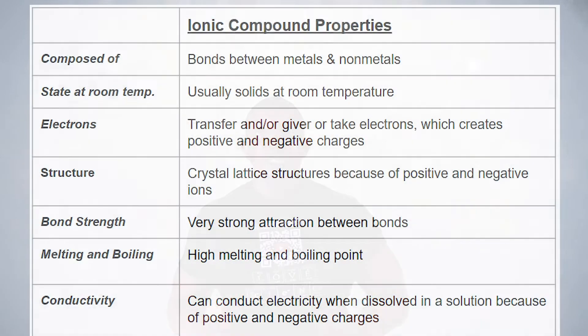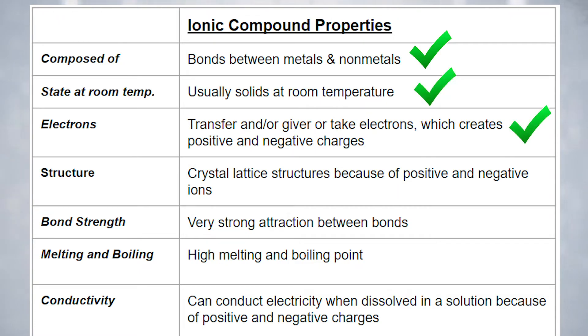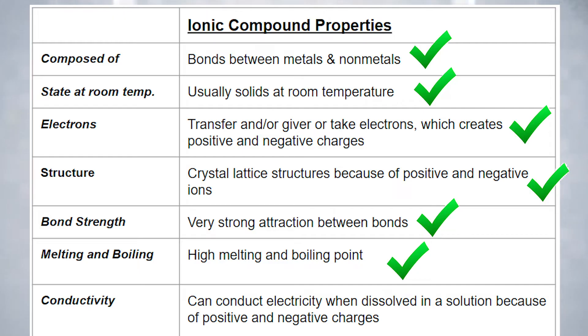Let's do a quick recap of ionic and covalent compounds. Ionic compounds are bonds between metals and non-metals and are usually solid at room temperature. They transfer — or give and take — electrons, which creates positive and negative ions. They form crystal lattice structures because of their positive and negative ions. They have a very strong attraction between their bonds, which gives them a high melting and boiling point. Ionic compounds can conduct electricity when dissolved in a solution because of their positive and negative charges.